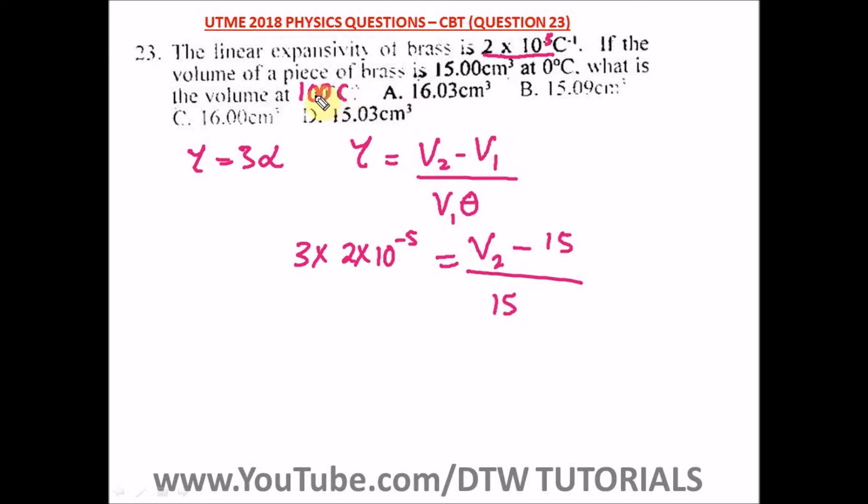What is our temperature? Our temperature is 100, times 100. So let's cross multiply here - 15 times this will give us 1500.